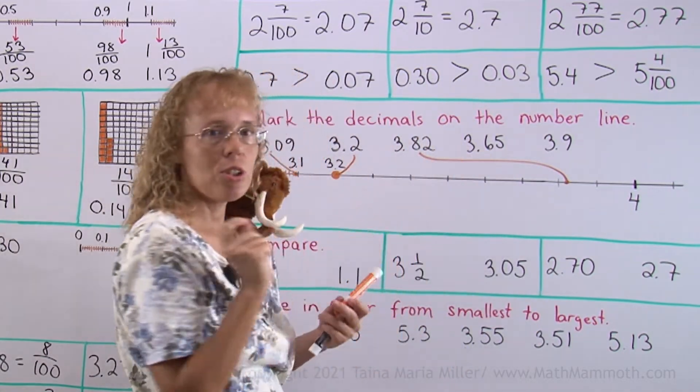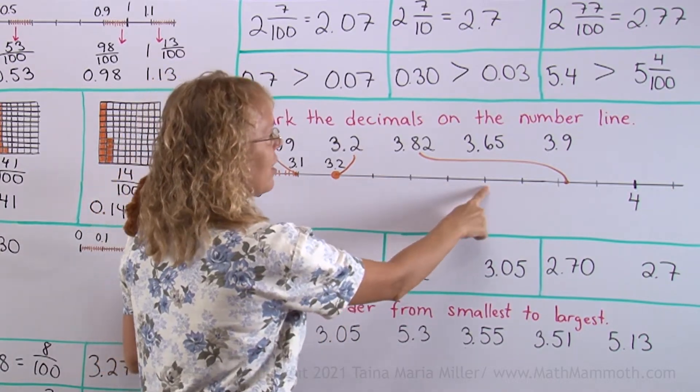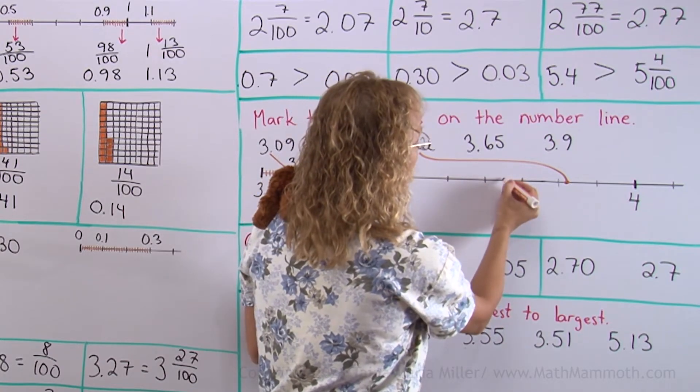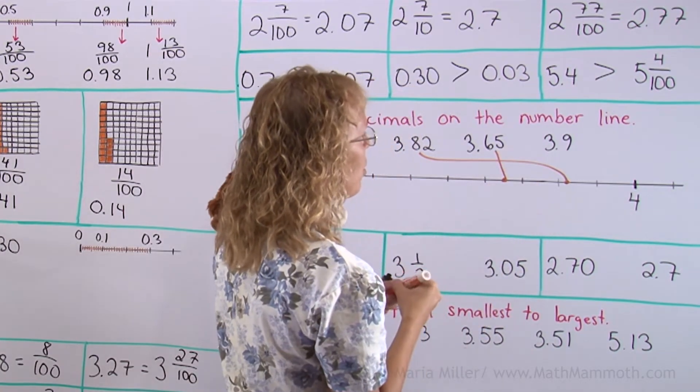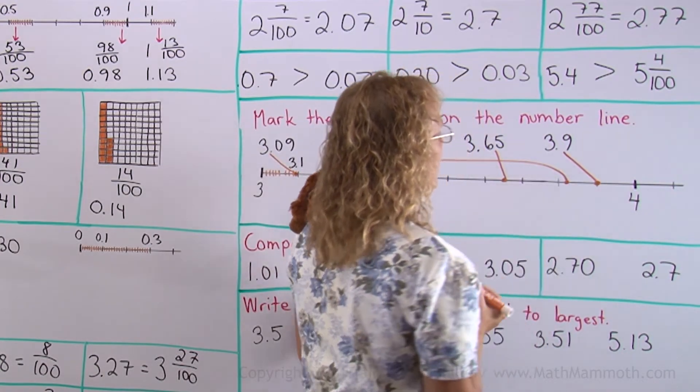3.65. First go to 3.6, 3 and 6 tenths here. And then go 5 hundredths more. It will be exactly in the midpoint here. And then lastly 3.9. Well, that is easy. It is exactly the tick mark here for 3 and 9 tenths.